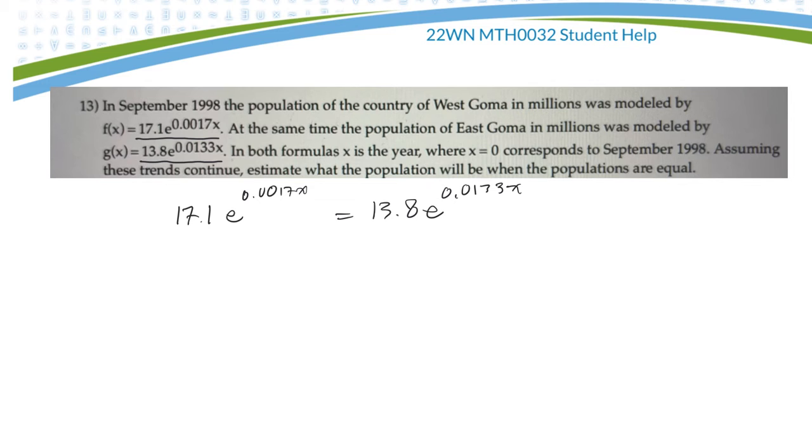So maybe first let me divide, just so it's not as hard. I'm going to divide both sides by 13.8 to cancel these out on this side. So 17.1 divided by 13.8 is 1.239e to the 0.0017x is equal to e to the 0.0133x.